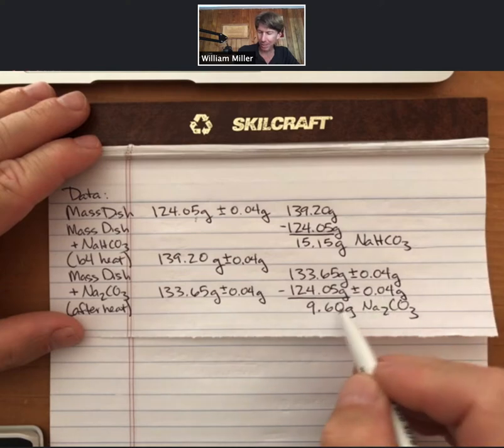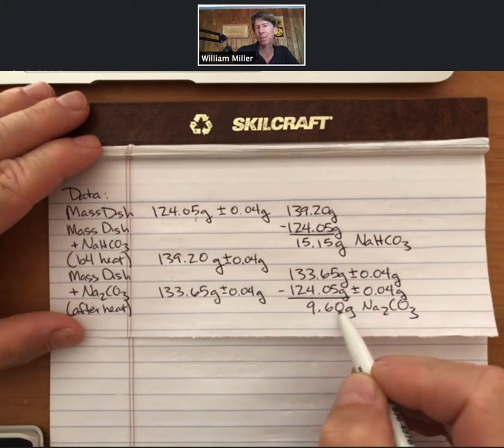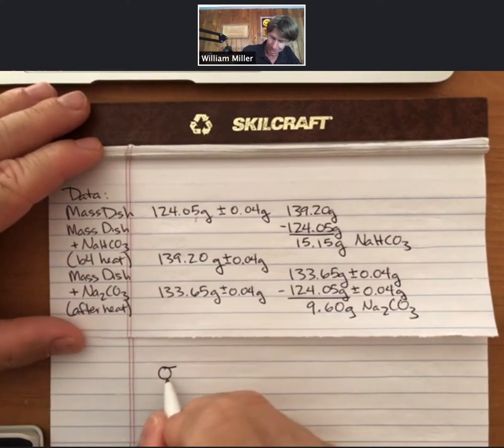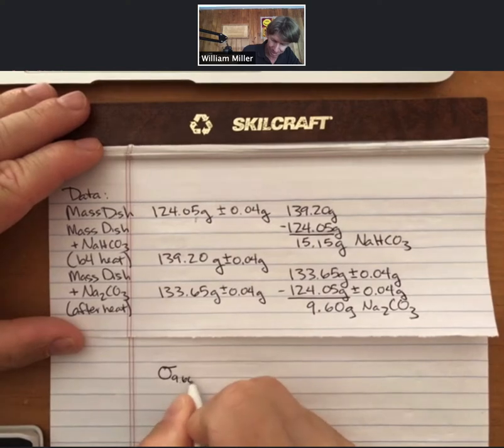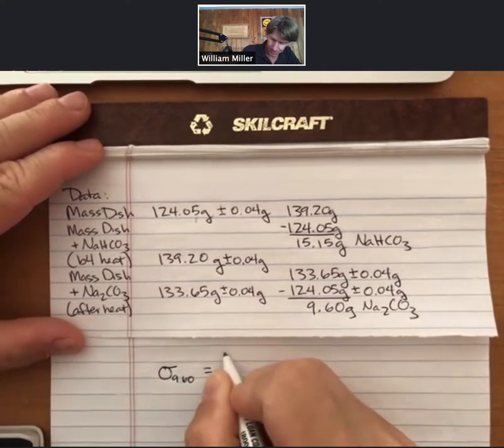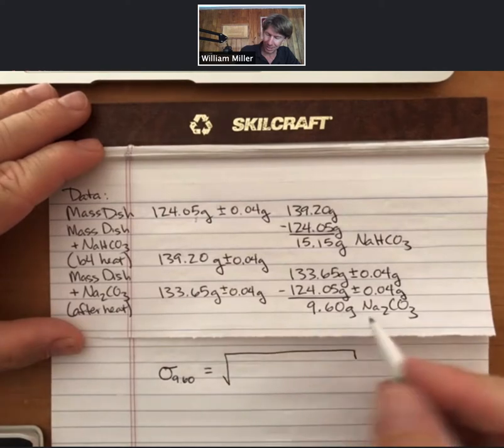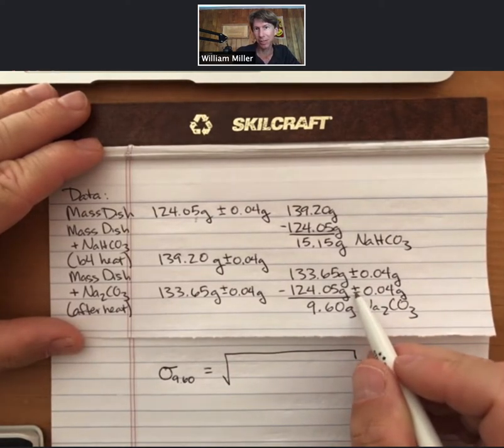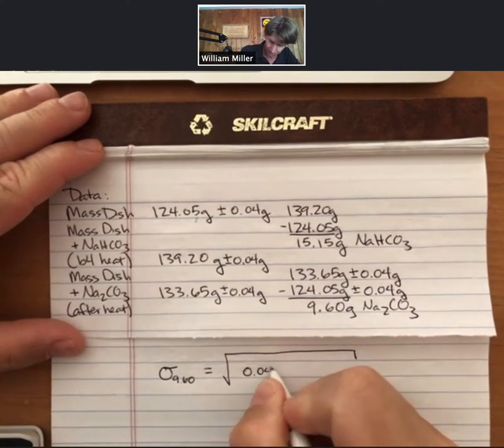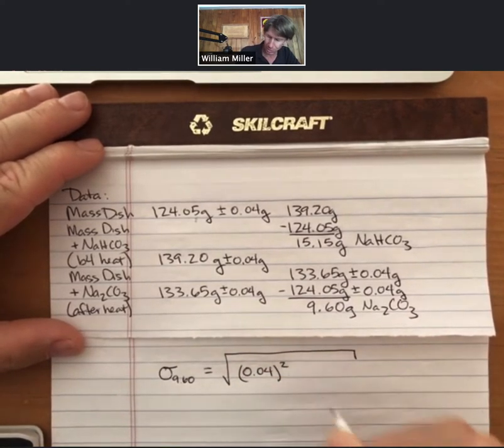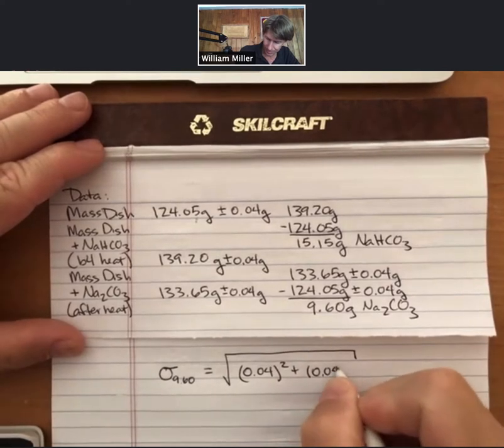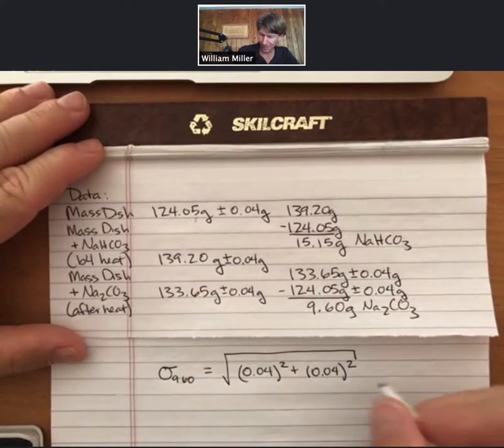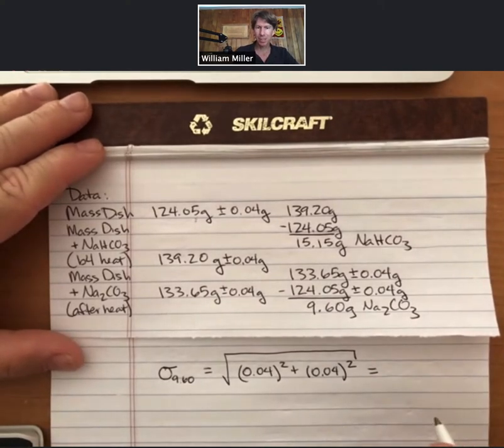The error for 9.60 is the sum of the squares of the errors. So sigma, which is the error in the number 9.60, is going to equal the error in each of these numbers. Even though it's subtraction, the errors are added: 0.04 squared plus 0.04 squared equals the error for this number.